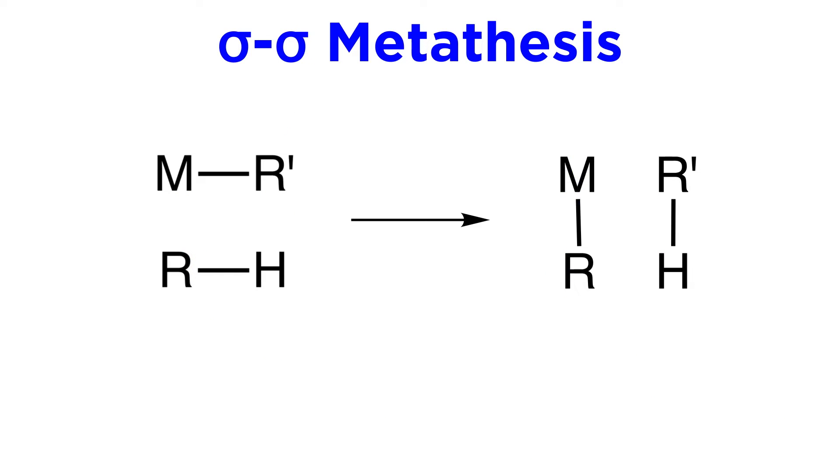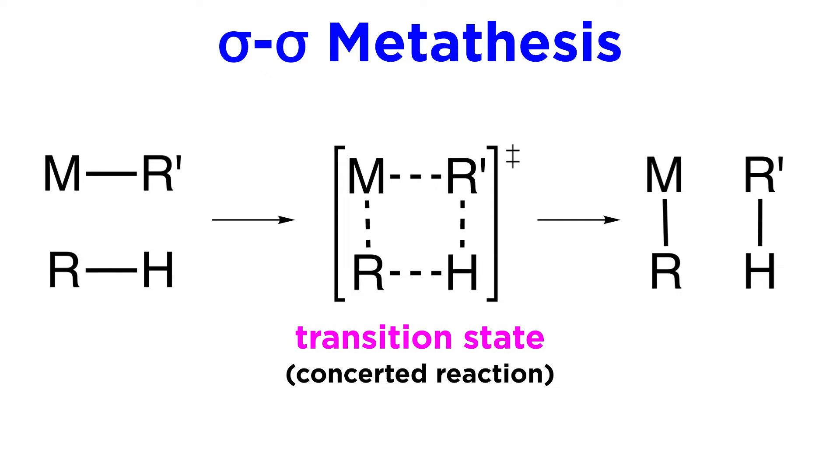Here is a generalized version of sigma-sigma metathesis. We have some metal attached to an alkyl ligand, and we have an alkane as separate molecular entities. We can line them up in this fashion, and as we will see, these two sigma bonds will break, and two new sigma bonds will form, with each group swapping partners like a little square dance. Because this is concerted, the transition state will look like this, with partial sigma bond character connecting all four groups in a square, before generating the products, the metal now with a different alkyl ligand and a different alkane.